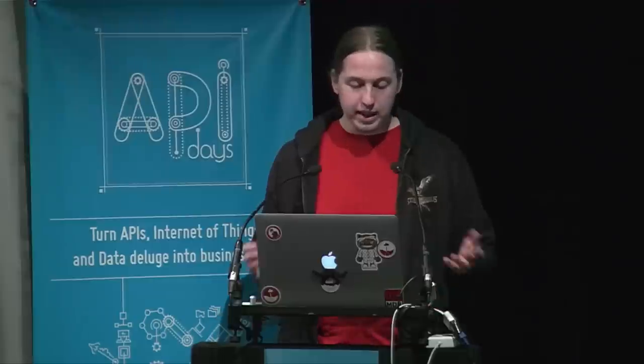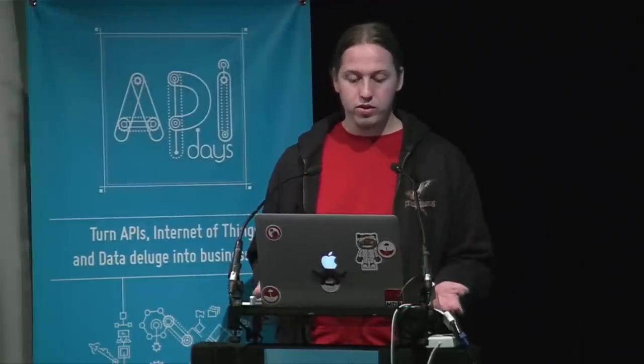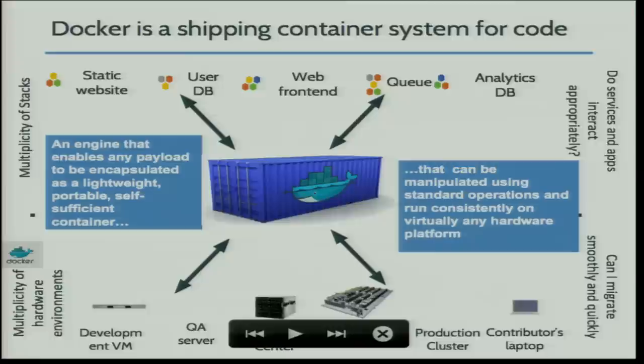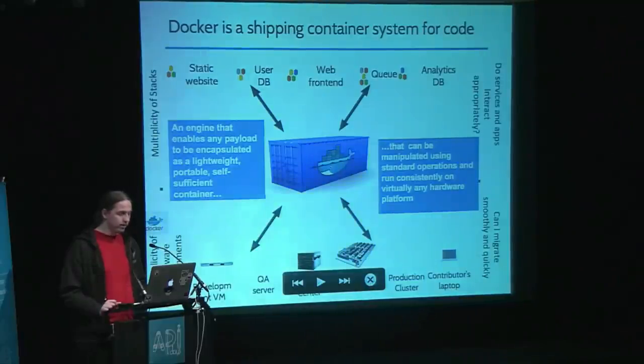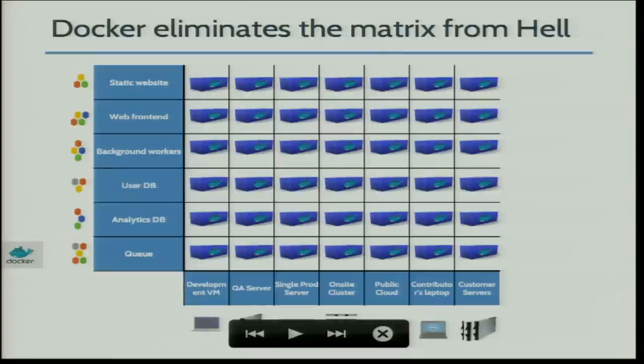Why don't we do the same thing with software? Well, that's what Docker is. You have containers, and each container is designed to contain your stack. It isolates it in a way that ensures dependencies don't interact badly. It also makes sure you can deploy it on any target in the same way with the same results. That's the value of Docker — it eliminates the matrix from hell.